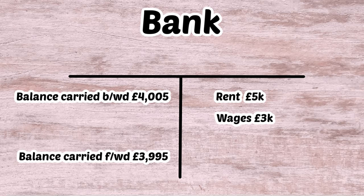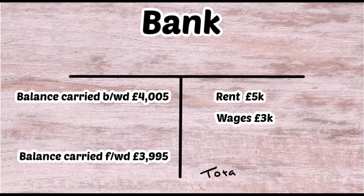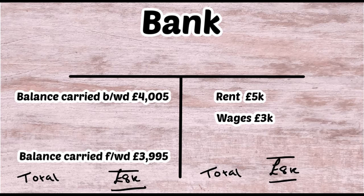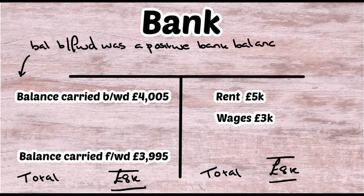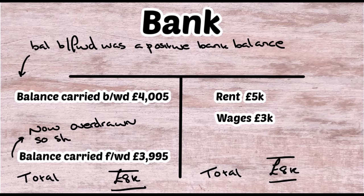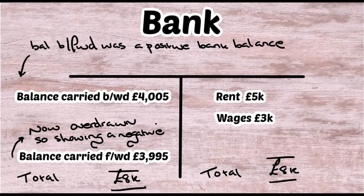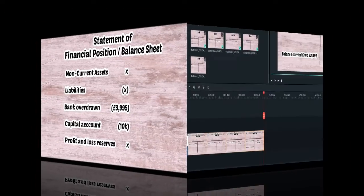Rent and wages combined total £8,000, which outweighs both any income received and the £4,005 brought forward from the bank. We had £4,005 at the start of the year and paid out more than that, so we now have an overdraft of £3,995. This is calculated as £8,000 minus £4,005 equals £3,995. Both sides balance back to £8,000 — you can have a positive balance brought forward but an overdrawn balance carried forward.